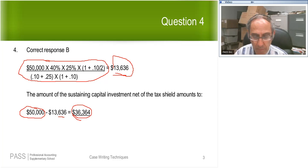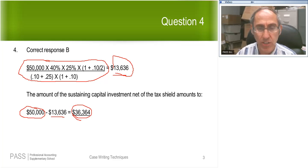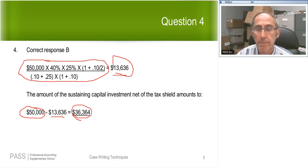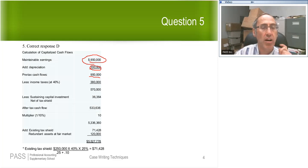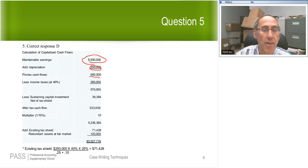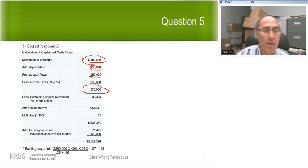Did anybody get an answer for question number five? Did anybody come up with a value of the company based on capitalized cash flows? Okay, let's look at it together then. To come out with an answer, I start off with my maintainable earnings. Here they gave you the maintainable earnings. If they hadn't given it to you, you would have had to start off with pre-tax earnings and calculate them on your own. I'm adding back the only non-cash item I'm aware of, the $100,000 of depreciation. And that gives me my pre-tax cash flow. I then calculate taxes based on 40%. That 40% was given to me. 40% of my 950 is 380. And I come down to $570,000 after tax.